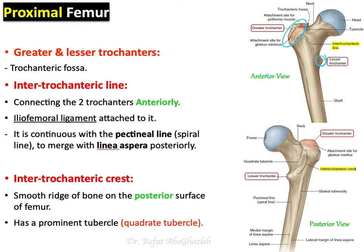We are looking at the anterior view of the proximal part of the femur. Anteriorly, the greater trochanter and lesser trochanter are connected to each other by a line known as the intertrochanteric line, because it lies between the two trochanters. The importance of this line is that it serves for the attachment of the iliofemoral ligament, which connects the ilium and femur — we will cover this when we discuss the hip joint.